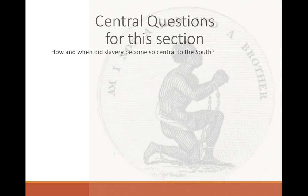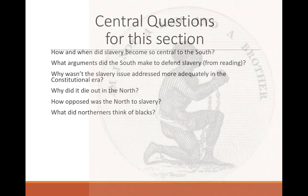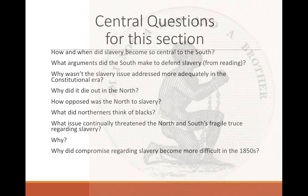Just a reminder of the central questions: How and when did slavery become so central to the South? What arguments did the South make to defend slavery? Why wasn't the slavery issue addressed more adequately in the Constitution? Why did it die out in the North? How opposed was the North to slavery? What did Northerners think of blacks? What issue continually threatened the fragile truce, and why? And why did compromise regarding slavery become more difficult in the 1850s? I don't know that I've answered that last one for you — we'll go over this in class. Be ready for this on Tuesday.